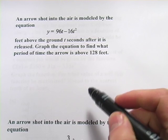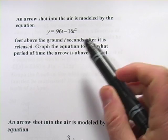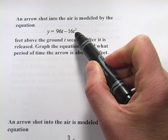Here we have some word problems that involve quadratic equations. The first one says an arrow shot into the air is modeled by this equation y equals 96t minus 16t squared.